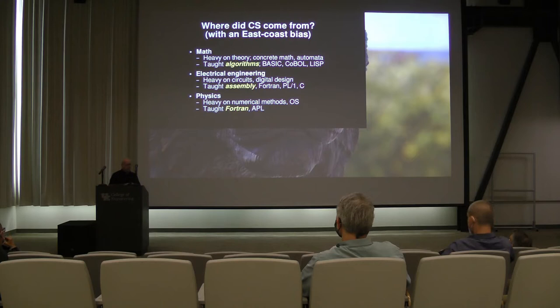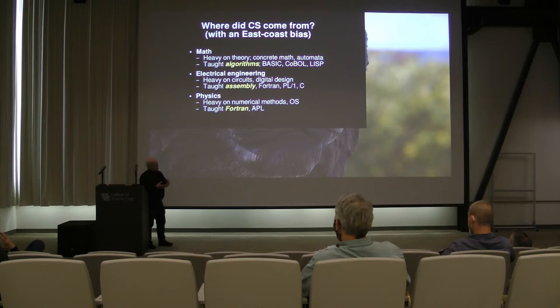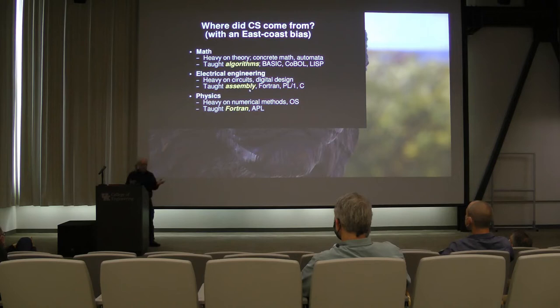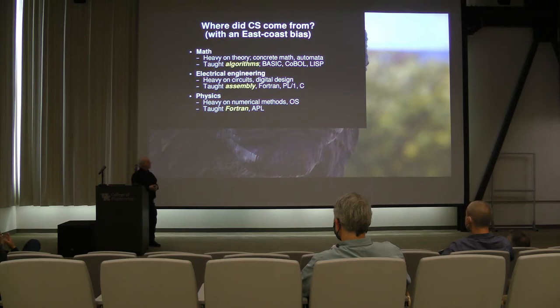It really depended on where the program came from. Schools where it came from the math side tended to be very focused on algorithms and very heavily on theory — things like concrete math were very fundamental, and they didn't care so much about programming. They were happy to see people programming in BASIC, COBOL, LISP, almost anything. Electrical engineering-spawned programs were a little narrower — basically heavy on circuits and digital design, but with a lot of programming language content as well. Compilers kind of smell a lot like hardware design. The main thing they focused on was assembly language, and then Fortran, PL/1, and then C, which was close to metal.